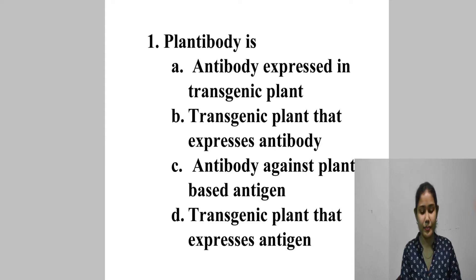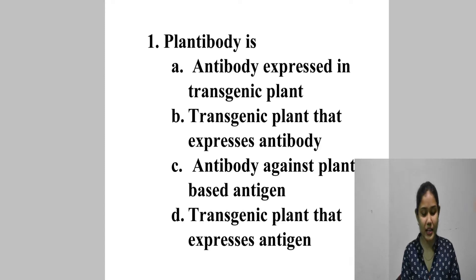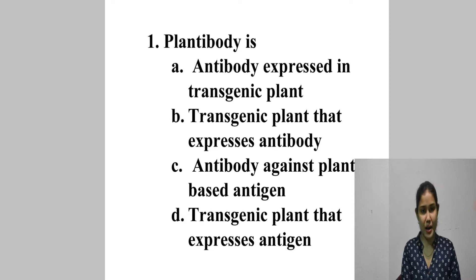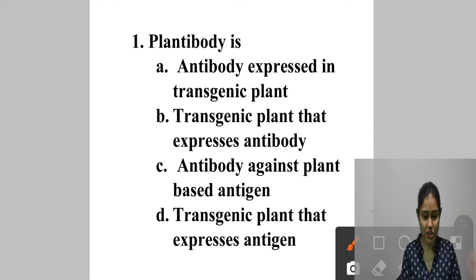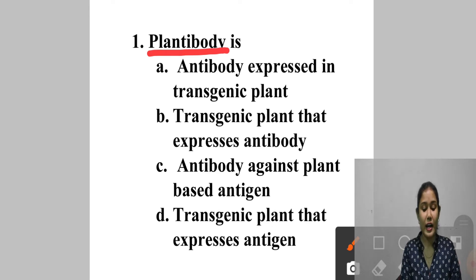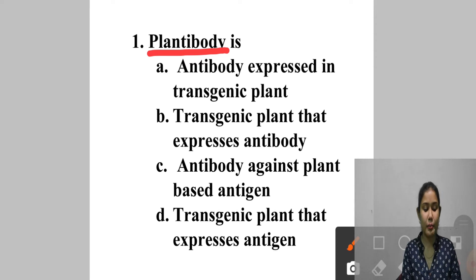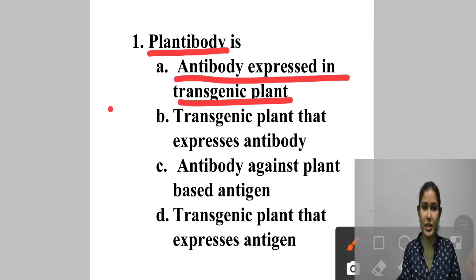Question 1: Plantibody is — A. Antibody expressed in transgenic plant, B. Transgenic plant that expresses antibody, C. Antibody against plant-based antigen, D. Transgenic plant that expresses antigen. A plantibody is an antibody produced by plants that have been genetically engineered with animal DNA. These are engineered via insertion of recombinant DNA gene transfer. So the answer is option A — antibody expressed in transgenic plant.